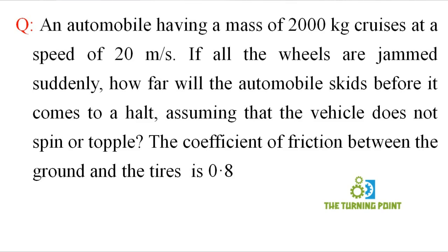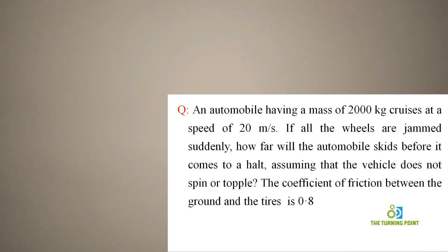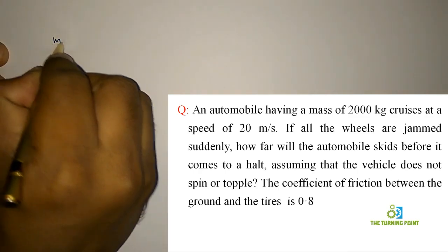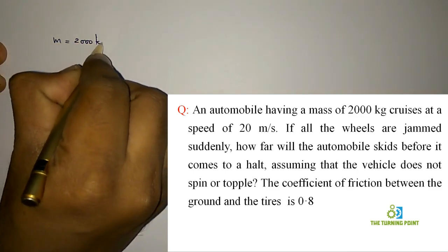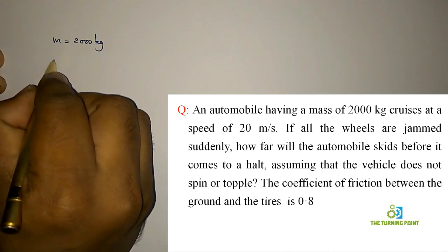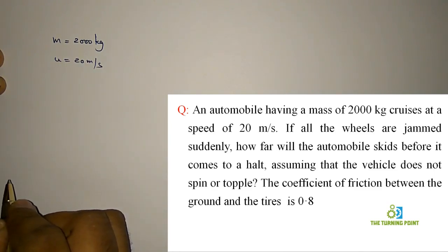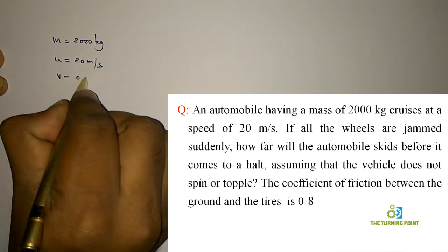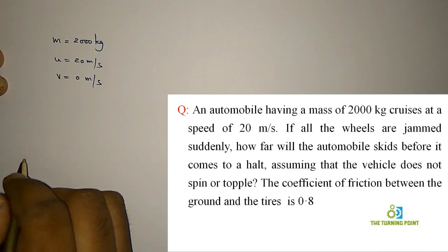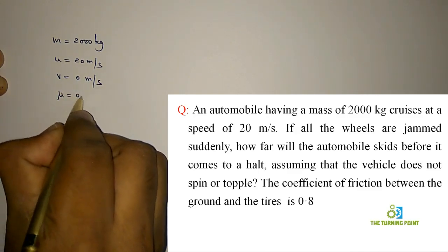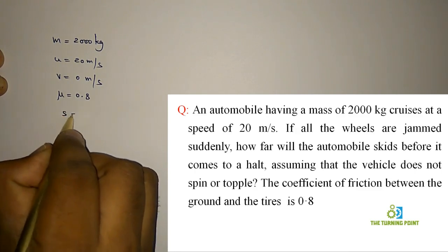First, let us write the given data. Given: mass is 2000 kg, initial velocity is 20 meters per second. It is mentioned that wheels are jammed suddenly, so when wheels are jammed suddenly, there won't be any velocity furthermore—that means final velocity is 0 meters per second. The coefficient of friction is given as 0.8, and we need to find the distance.